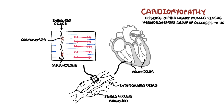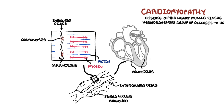The desmosomes hold the fibers together when the heart contracts. The actual contractile units of the cardiac muscles are the sarcomeres, which are made up of myosin and actin filaments. These two filaments slide past one another to cause a muscle contraction.